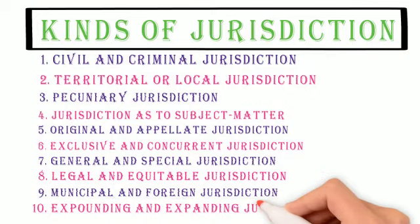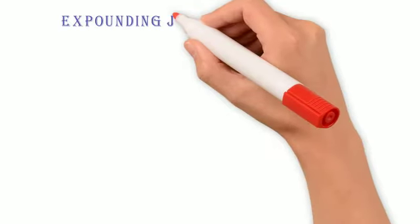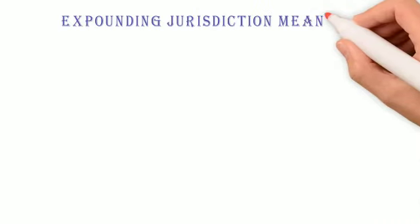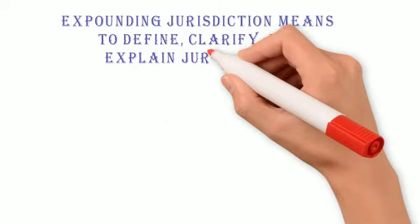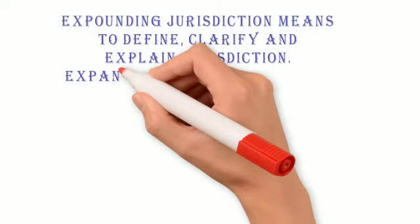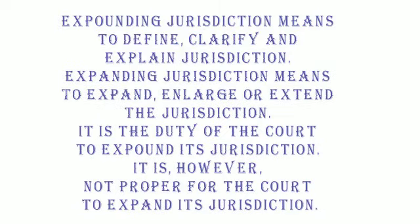10. Expounding and Expanding Jurisdiction: Expounding jurisdiction means to define, clarify, and explain jurisdiction. Expanding jurisdiction means to expand, enlarge, or extend the jurisdiction. It is the duty of the court to expound its jurisdiction. It is, however, not proper for the court to expand its jurisdiction.